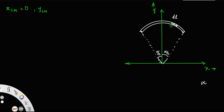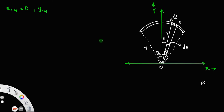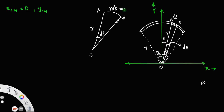Let us consider a small sector with a small angle dθ, where θ is the angle measured from the y-axis. Let R be the radius of the arc. For this small element — labeling the points O, A, B — the arc length AB is equal to R dθ. Therefore, our dL is equal to R dθ.